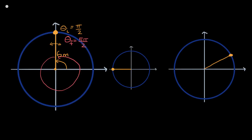The angular displacement in this situation, delta theta, is going to be equal to two pi radians. The next question is: what is the distance that the ball would have traveled? And remember, distance — we actually care about the path. So the distance traveled would essentially be the circumference of this circle.